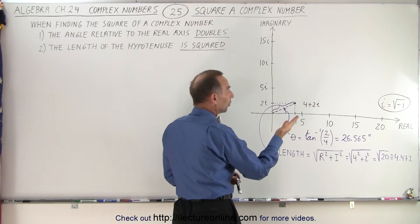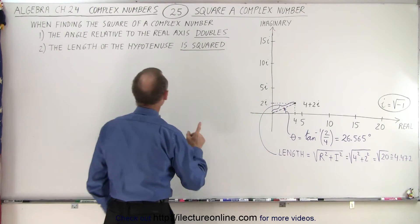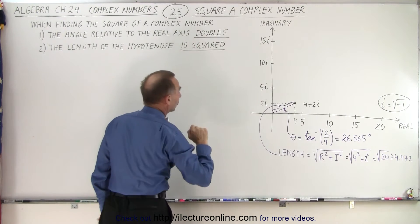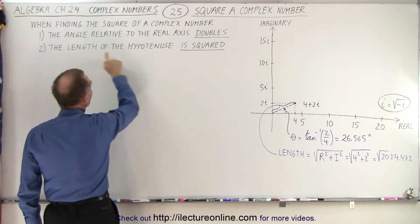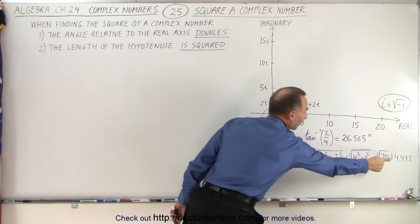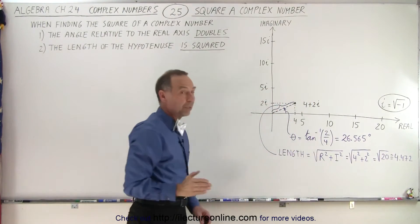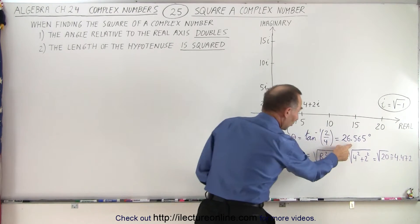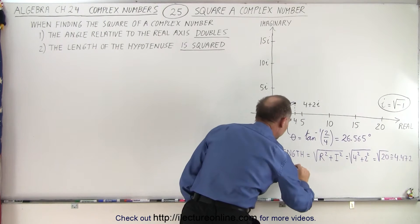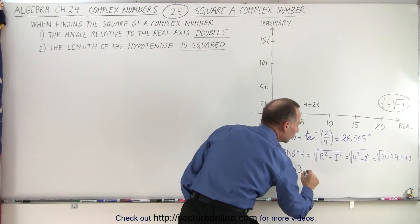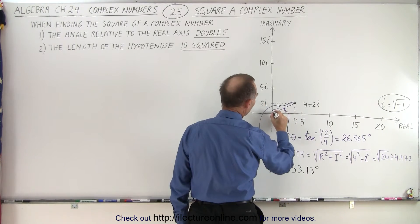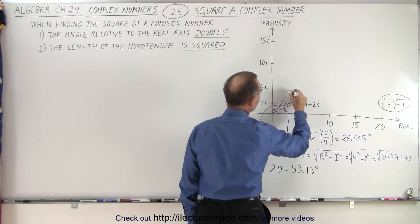Now it turns out that when we square this number, we end up with a new number. That new number will lie along a line where the angle relative to the real axis is now doubled. The length of the line to that new point — the hypotenuse — is going to be the square of the value we had for the original number. So if we double this angle, we get 2 times theta, which is now going to be equal to about 53.13 degrees. Then we have a line along this new angle.